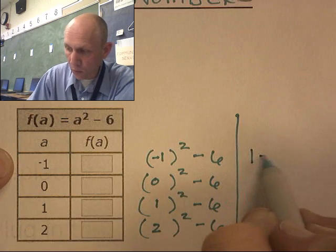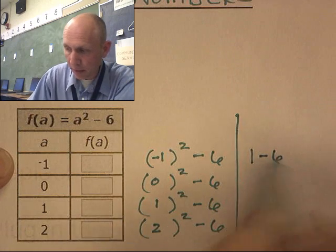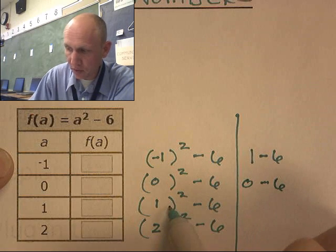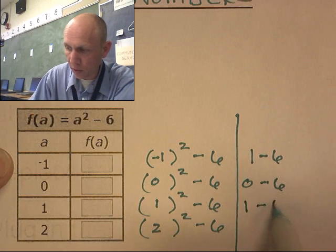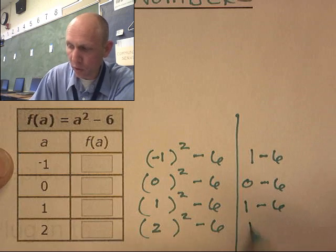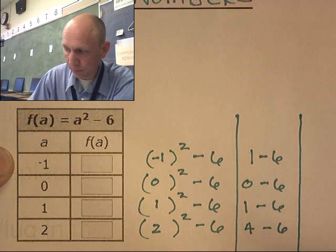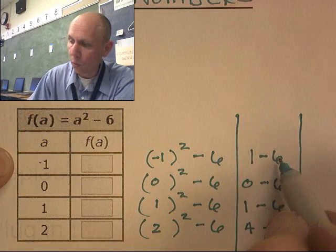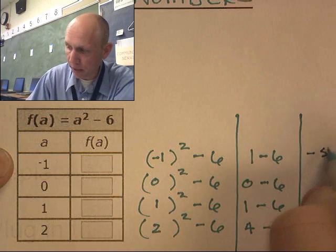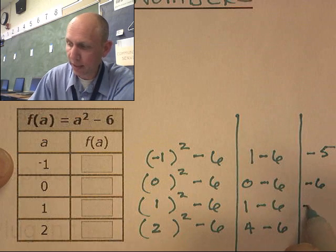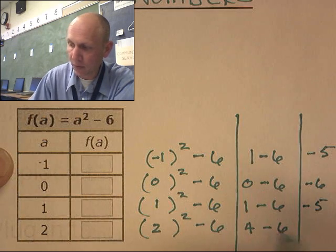Negative 1 squared is 1, minus 6. Zero squared is 0, minus 6. One squared is 1, minus 6. Two squared is 4, minus 6. So we get: 1 - 6, 0 - 6, 1 - 6, 4 - 6.